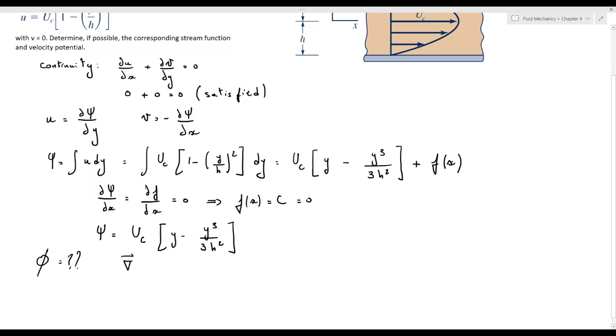Now let's determine the velocity potential phi. In order for phi to exist, the condition is the flow should be irrotational. Then the curl of the velocity vector here in the z direction should be equal to 0. So we also need to check this condition.